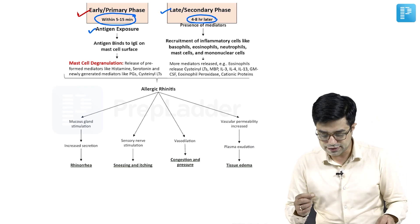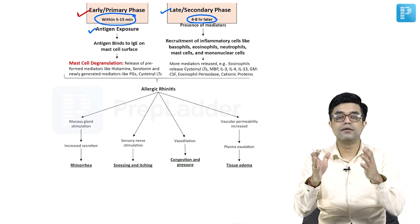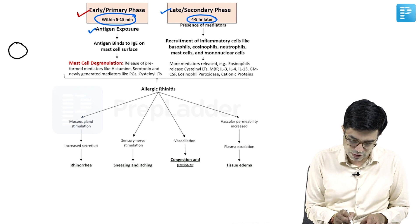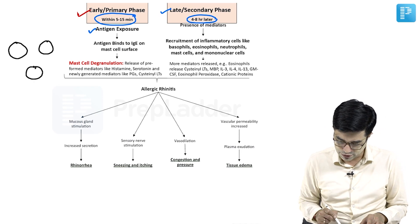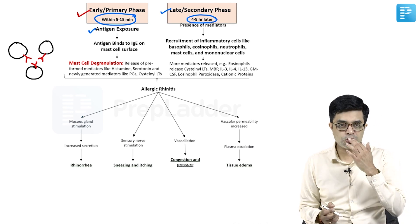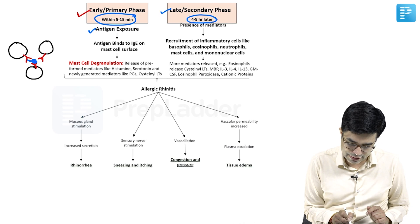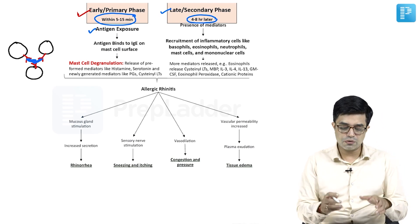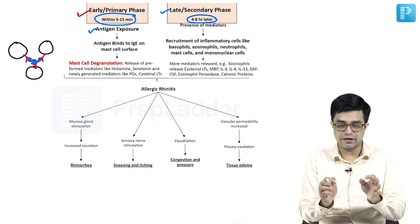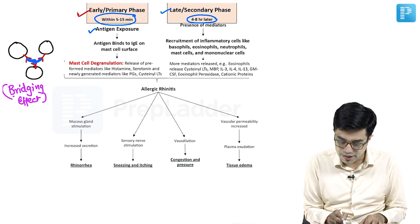In the early phase, there is antigen exposure. IgE is already present on the mast cells. This antigen will bind to IgE and act as a bridging structure — the allergen comes and binds to multiple mast cells, producing a bridge between them. This is called the bridging effect. This bridging effect leads to mast cell degranulation.